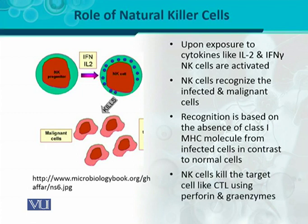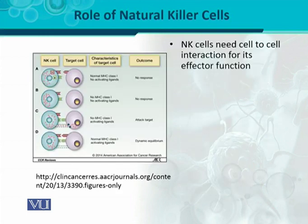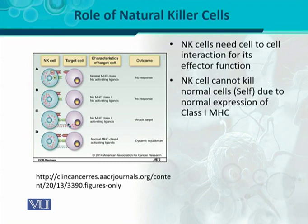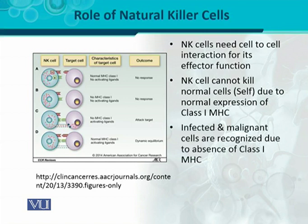The natural killer cell kills the target cell like CTL — releasing perforin or granzymes — and ultimately kills it. Cell-to-cell interaction is very important because cell-mediated immunity requires physical contact. Natural killer cells do not kill normal cells because normal cells have normal expression of class 1 MHC, while infected and malignant cells are recognized due to the absence of class 1 MHC.